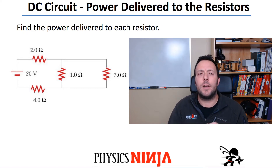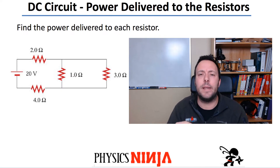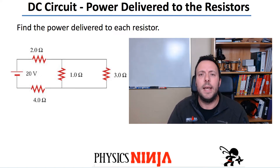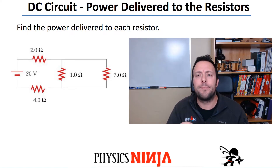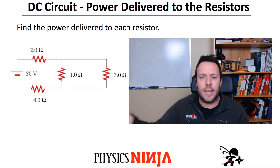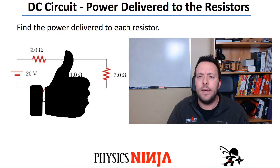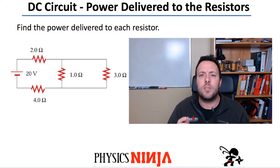Hi everybody, PhysicsNinja here. I'm going to look at a DC circuit problem, and I want to calculate the power being dissipated by the resistors. We've got a simple circuit with one 20-volt power supply and four resistors, set up in a way to make the problem a bit harder. If you like the video, don't forget to give it a thumbs up and subscribe.